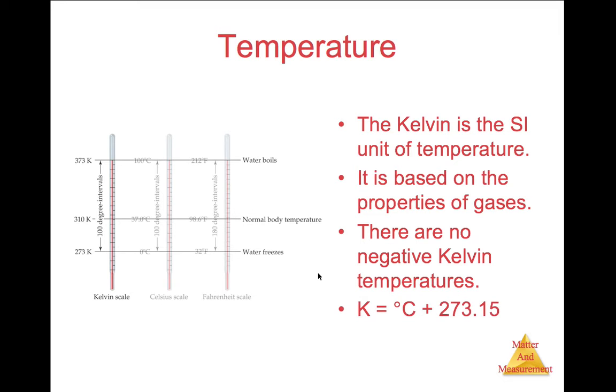To convert from Celsius to Kelvin, simply take your Celsius temperature and add 273 to it and you'll have the Kelvin. Notice Kelvin does not use a degree symbol like Celsius does.